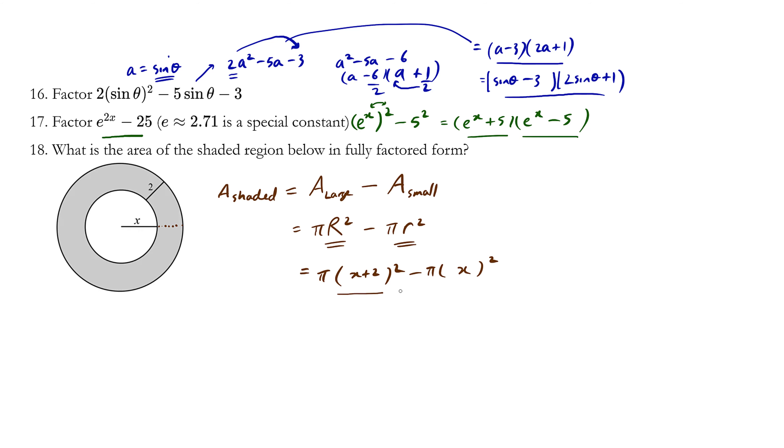And now we see two terms here, and we should factor out what's common. The common factor is π, so let's factor out a π. π times (x + 2)² becomes the first term, and π times -x² - you feed the dog, you feed the cat - becomes the second term.